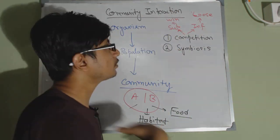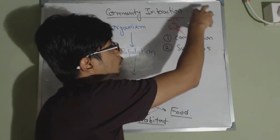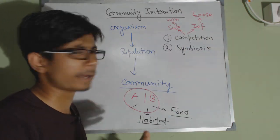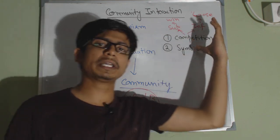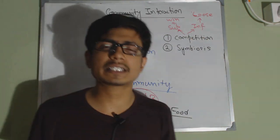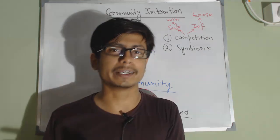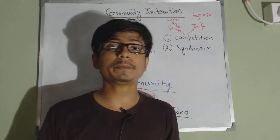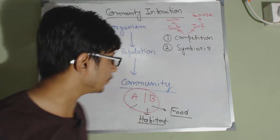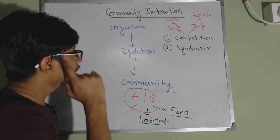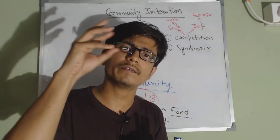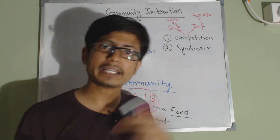In summary: winning means evolution — positive; losing means extinction — negative. Examples of competition include a lion and tiger, or a tiger and wolf competing for their food and habitat. In competition, both are fighting for something in common — that is the idea.